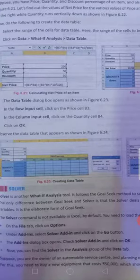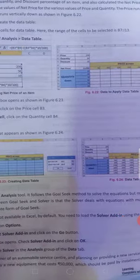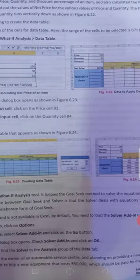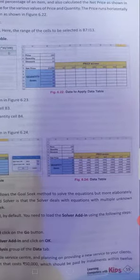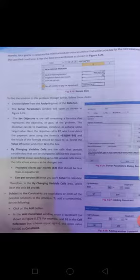Now what we do? Suppose we are the owner of an automobile service center and planning on providing a new service center for this. We need to buy a new equipment that costs 50,000 which should be paid by installment within 12 months. So in this we will calculate EMIs, lowest EMI for service that will let us pay for the new equipment.